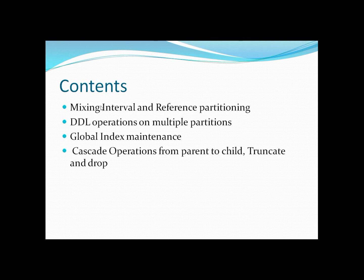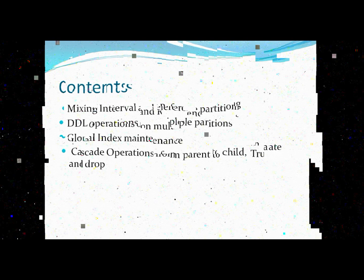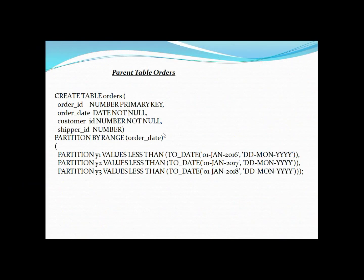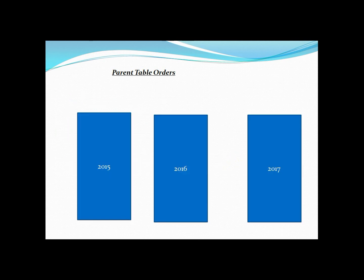Let's discuss mixing interval and reference partitioning. Here I have my parent table 'orders' partitioned by range on the column 'order_date'. I have created three partitions: data pertaining to 2015 and before, data in 2016, and data in 2017. When executed, Oracle creates three segments on disk — one for 2015 and before, one for 2016, and one for 2017.